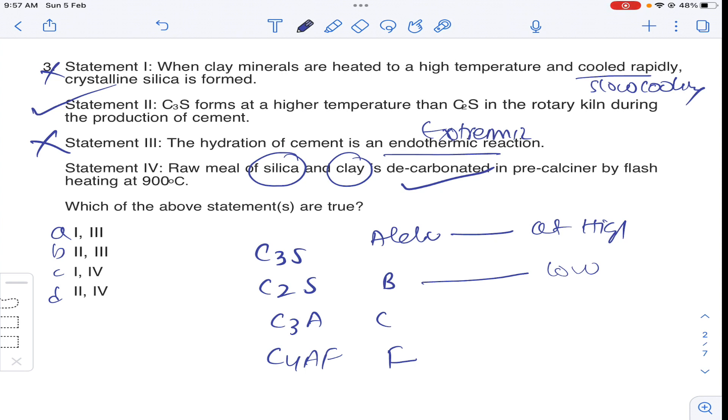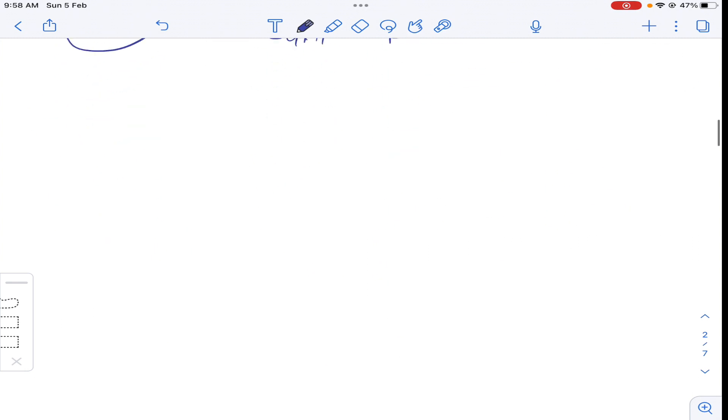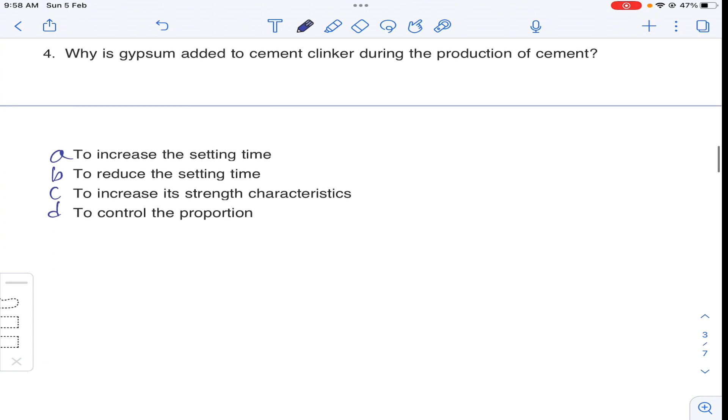2 and 4 are correct statements. So answer D for question number 3. Coming to question number 4, why is gypsum added to cement clinker during production of cement? Obviously, the main purpose of addition of gypsum to the cement clinker is to increase setting time of cement. Answer A for question number 4.